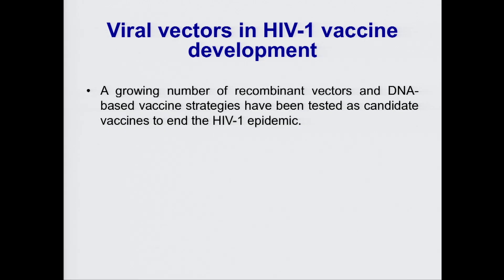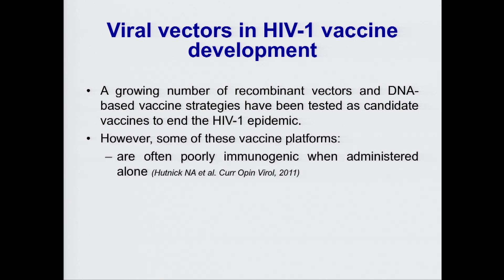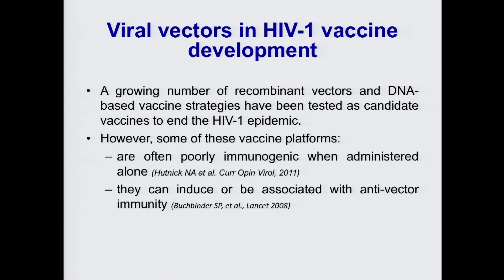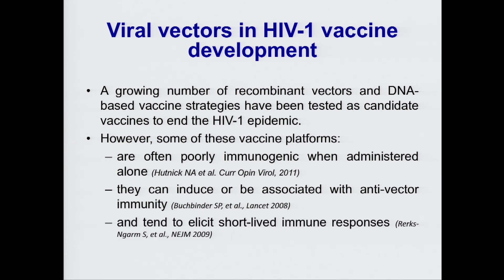Today I'm going to present our study on sequential immunization with an integrase defective lentiviral vector. A growing number of vector and DNA-based vaccine regimens have been tested as candidate vaccines to end the HIV epidemic. However, some of these vaccine platforms are often poorly immunogenic when administered alone. They can induce or be associated with antivector immunity and tend to elicit short-lived immune responses.